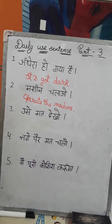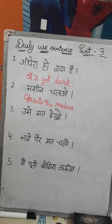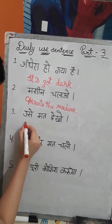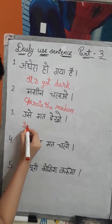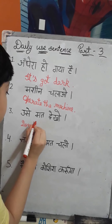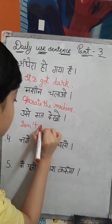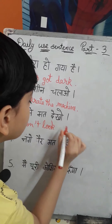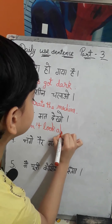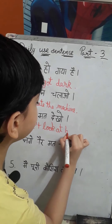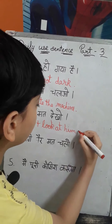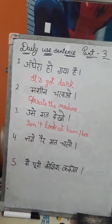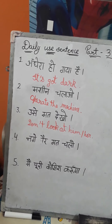So my third sentence is: Usse mat dekho. We will write it in English like: Don't look at him or her. One more time — Don't look at him or her.